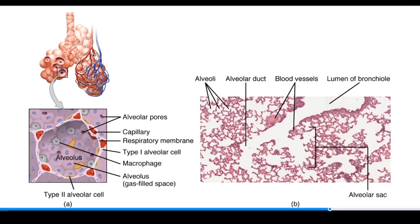The capillaries that surround the outside of the alveoli — we can see several around this particular one in the drawing — are where external respiration takes place. Across the respiratory membrane, where the simple squamous epithelium of the alveoli meets up with the simple squamous epithelium of the capillary, gases move across that membrane.